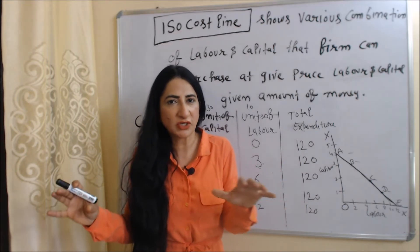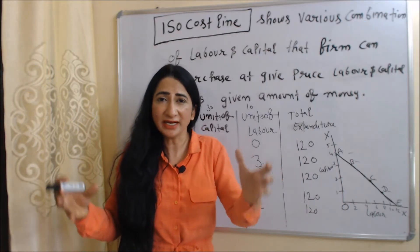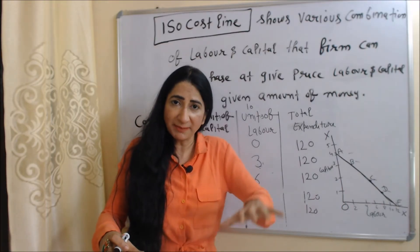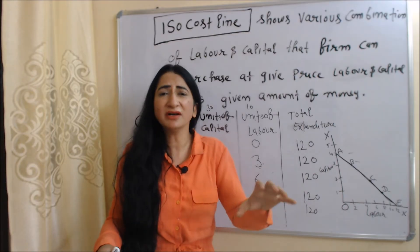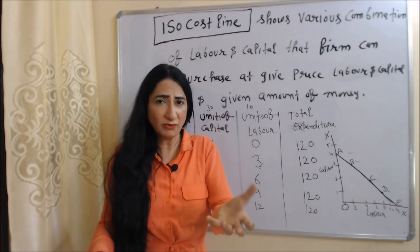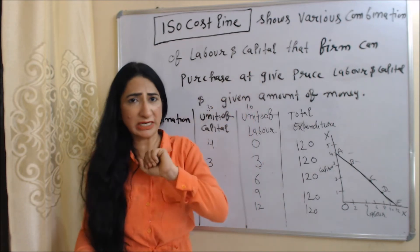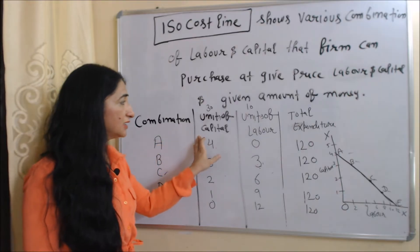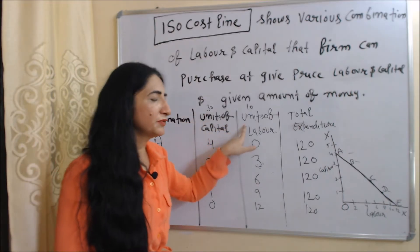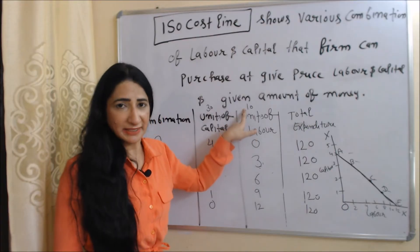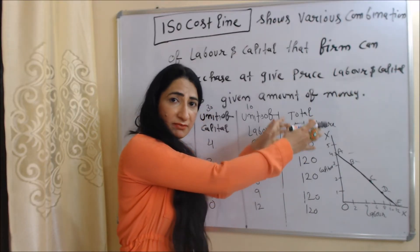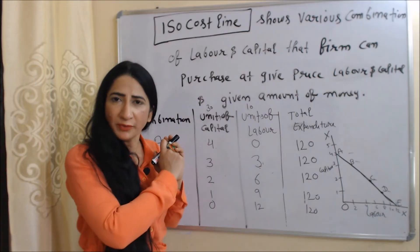Now we are going to talk about the iso cost line. The iso cost line shows various combinations of capital and labor that a firm can purchase with a given price of capital and labor and a given amount of money. In the table, the first column has combination, the second has units of capital with a price of 30 rupees per unit, the next has units of labor with a price of 10 rupees per unit, and the last column has total expenditure.